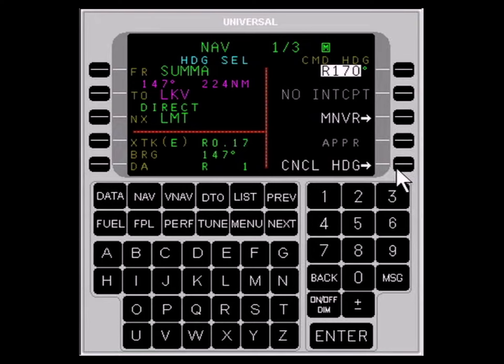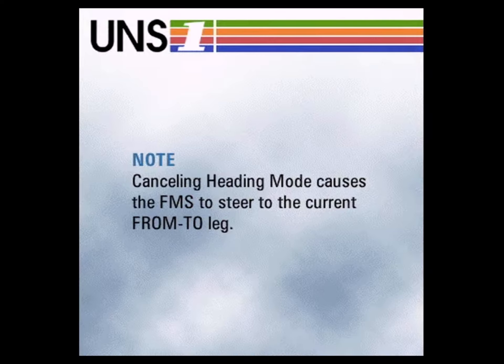Use of the DTO function key and selection of a new TO waypoint will also cancel the heading mode. Please note, cancelling the FMS heading mode causes the FMS to steer the aircraft to the current FROM-TO leg. An intercept heading of up to 45 degrees to the leg is possible and likely.